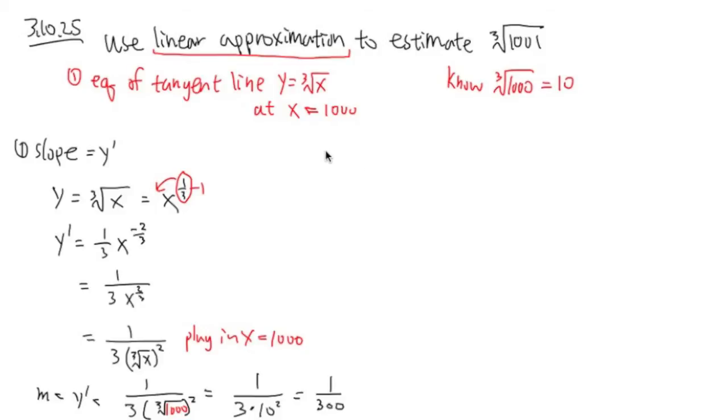And now, secondly, we need a point. The x value is 1,000. The y value will be 10. So we know x equals 1,000, and y is the cube root of 1,000, which is 10. So the point is 1,000, 10. And here is going to be the x1 value, the y1 value, that we are going to use for the point slope form.